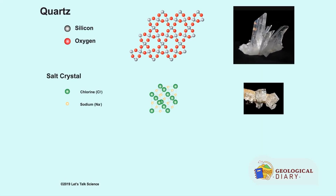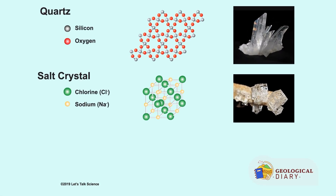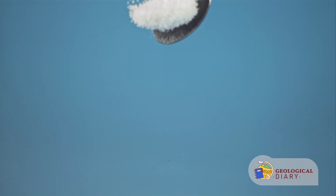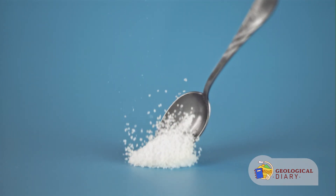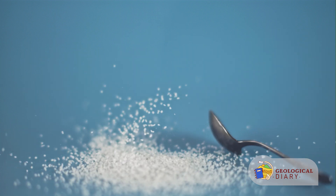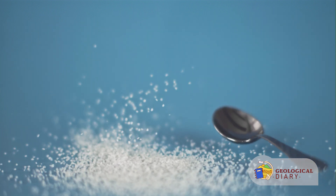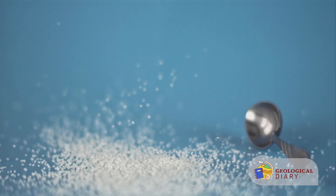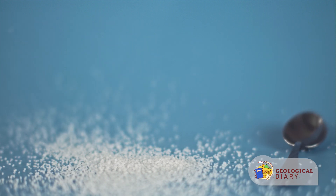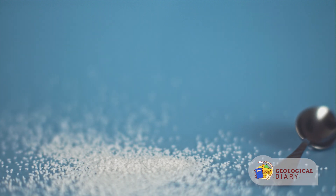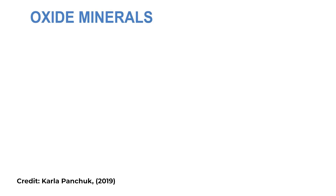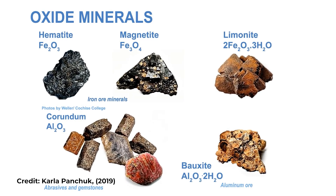Halites: this mineral group is mainly the result of evaporation of water rich in brines. Halite — common table salt — is the most well-known halite mineral, but not the only one. The chemical elements known as the halogens — fluorine, chlorine, bromine, and iodine — bond with various metallic atoms, resulting in other halite minerals.